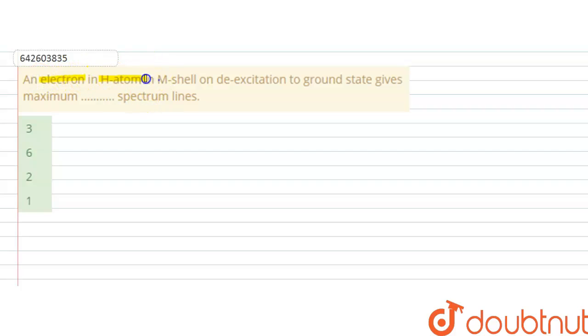electron in hydrogen atom in M shell on de-excitation to ground state gives maximum dash spectral lines. So in this question, it is given that electron in hydrogen atom is present in M shell and it de-excites to ground state,